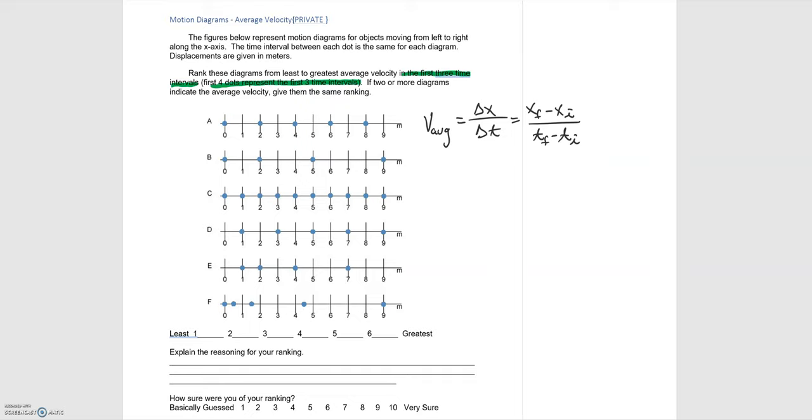We start at the first dot and then we count two, three, four and we put another mark there. And now that is our three time intervals. Let's do the same for the rest of them. We go here and then we have four.